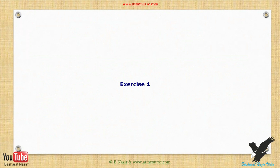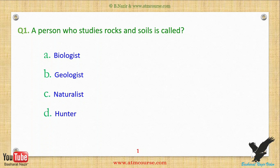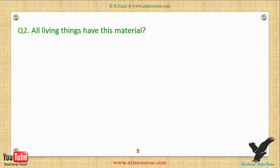Exercise one: A person who studies rocks and soils is called — choose from one of these answers. Question two: All living things have this material — choose from one of these answers.